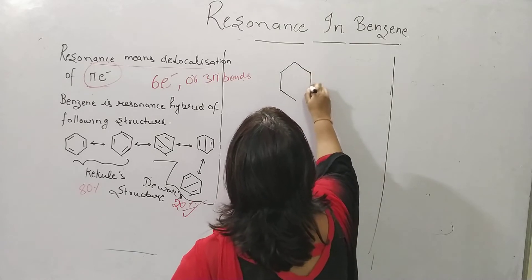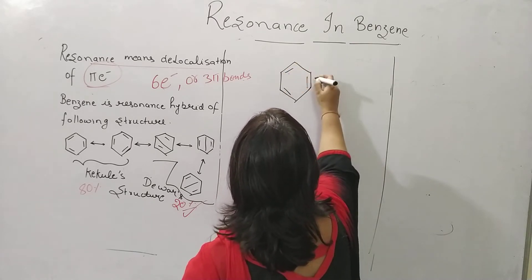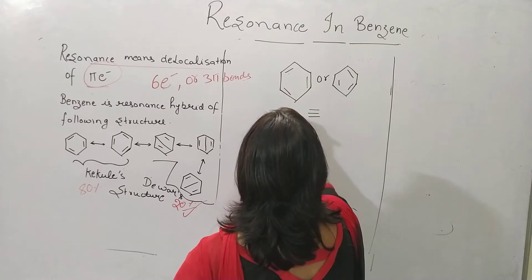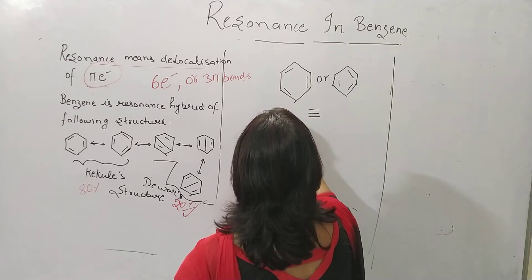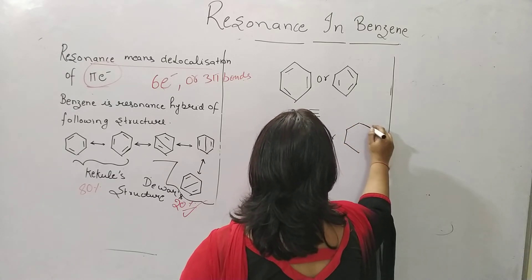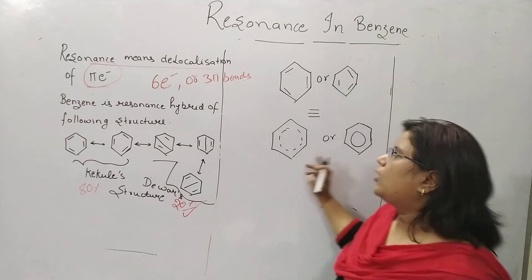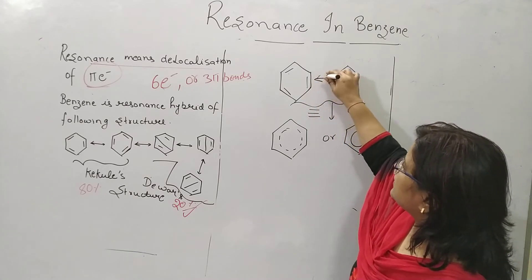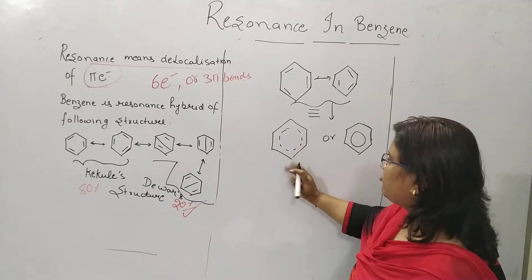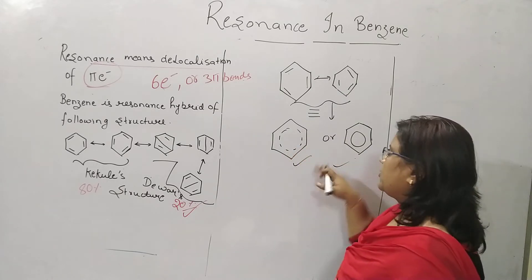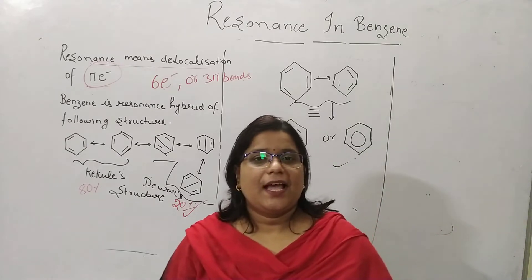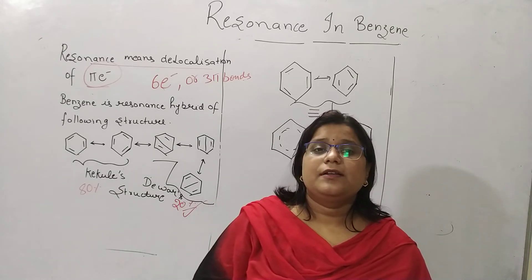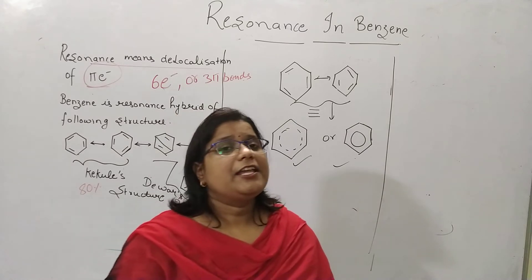Benzene is the complete resonance hybrid — we can draw it like this, or like this. The pi electrons can be denoted by a dotted circle or a complete circle. These structures form the complete benzene ring. There are some evidences for why we accept these resonance structures: the carbon-carbon bond length and the heat of hydrogenation are the main proofs.